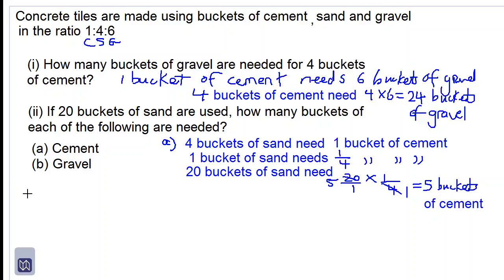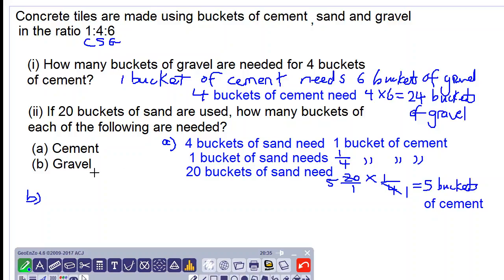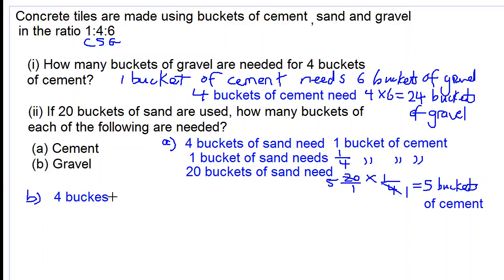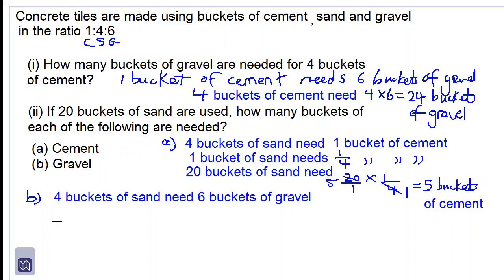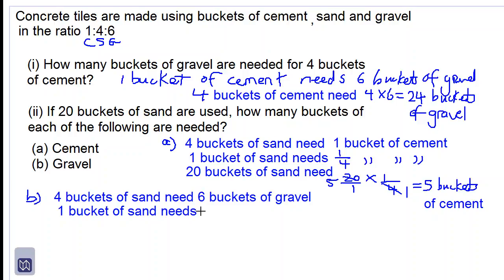Let's look at part B — we need to find for gravel now. The relationship between sand and gravel from the ratio is that four buckets of sand are needed for six buckets of gravel. So four buckets of sand need six buckets of gravel. For one bucket of sand, we take the right-hand number over the left-hand number: six over four buckets of gravel.